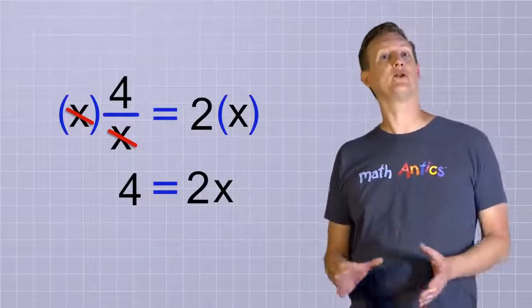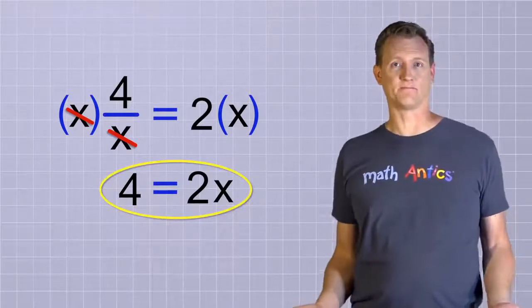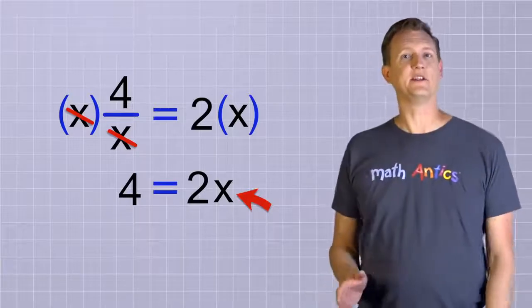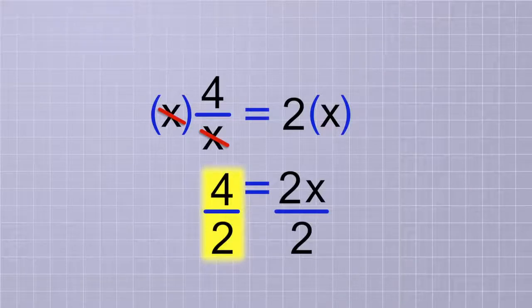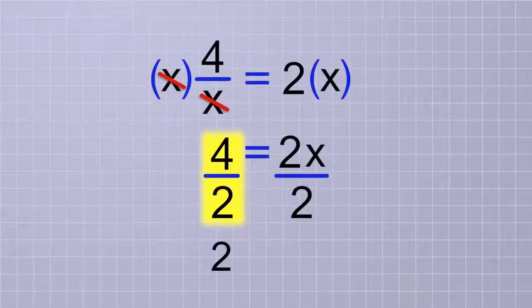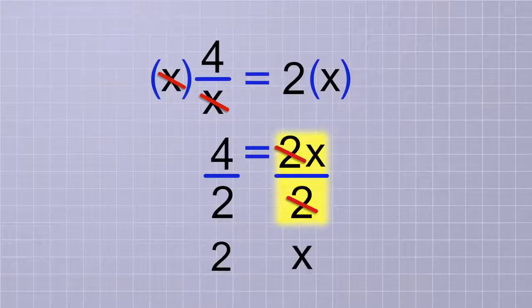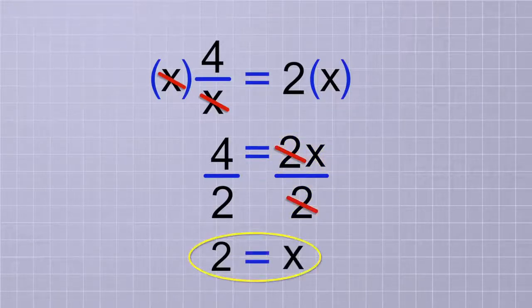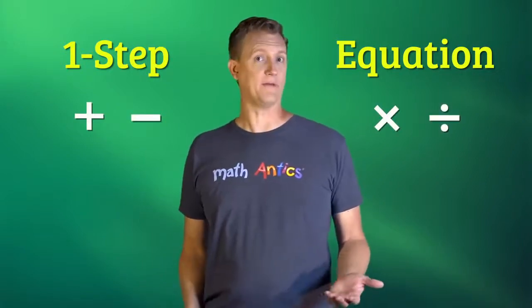True, that didn't solve the equation, but it did get rid of the tricky x on the bottom, and it changed our equation into a problem that we already know how to solve. Now, to get the x all by itself, we just need to divide both sides of the equation by 2. On the first side, we have 4 divided by 2, which is 2. And on the other side, the 2 over 2 cancels and we're left with just x. So now we know that x equals 2. Now that you've watched these first three Math Antics Algebra videos, you should be able to solve any simple one-step equation involving addition, subtraction, multiplication, or division, right?